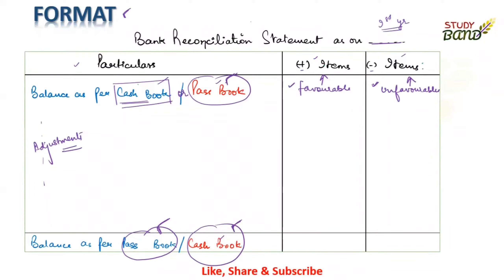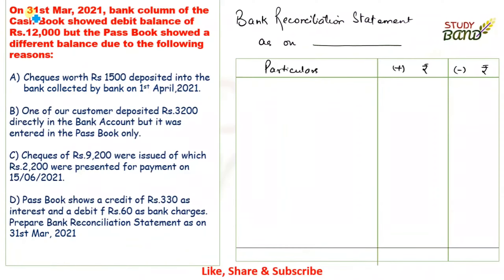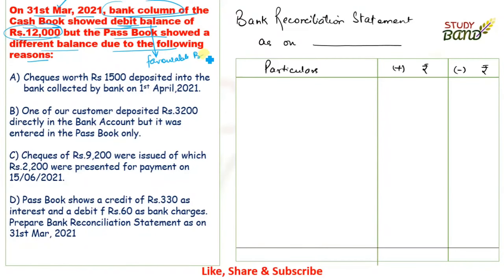Now let's solve the practical question. On 31st March 2021, the bank column of the cash book showed a debit balance of rupees 12,000, but the pass book showed a different balance due to the following reasons. A debit balance as per cash book means it is a favorable balance. So our starting point is: debit balance as per cash book = rupees 12,000 (positive side), and we need to find the balance as per pass book.